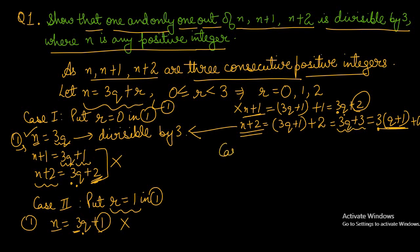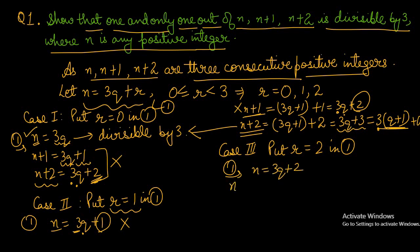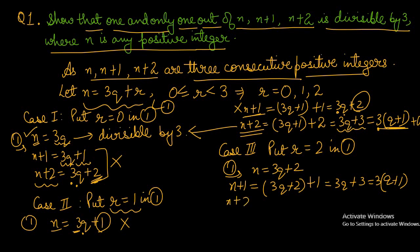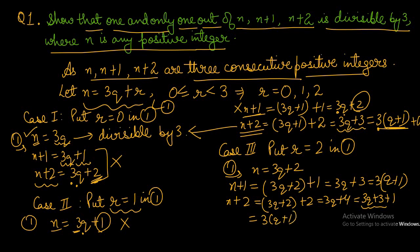We will take case number 3. We put r equal to 2 in line number 1. So our first line becomes n is equal to 3q plus 2. If we find out n plus 1, n value is 3q plus 2, we add 1, so it will be 3q plus 3 — here 3 is common, giving 3 into (q plus 1). If we find out n plus 2, it will be 3q plus 2 plus 2, which is 3q plus 4, and we can write this as 3q plus 3 plus 1 — so 3 is common inside as q plus 1, and back is plus 1.